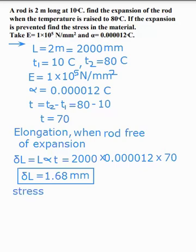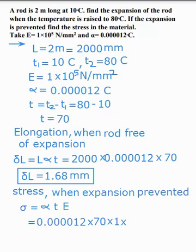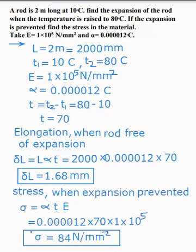Next, stress when expansion is prevented. Sigma is equal to alpha × T × E. So alpha is 0.000012, T is 70, and E is 1 × 10⁵ Newton per m². Therefore sigma is equal to 84 Newton per m².